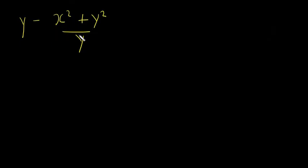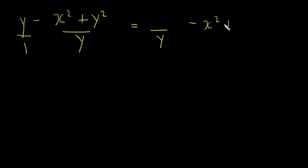The first thing you want to do is add these two fractions together. This doesn't look like a fraction, but y actually is y over 1 — that's the easiest way to look at it. The lowest common denominator is going to be just y on the bottom, because y is already there. You don't need to change that fraction, since y is already the lowest common denominator. You only have to change the first fraction.